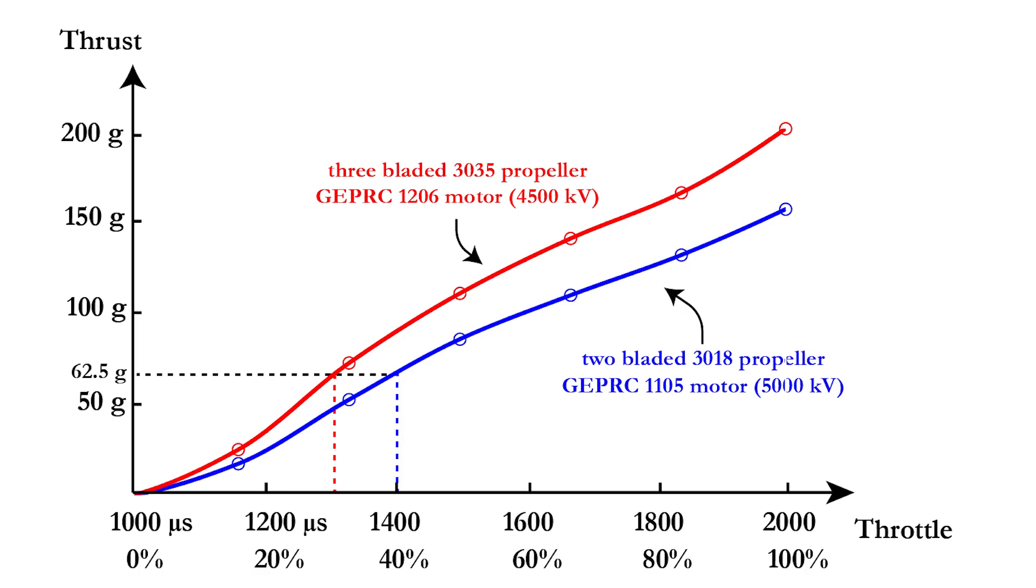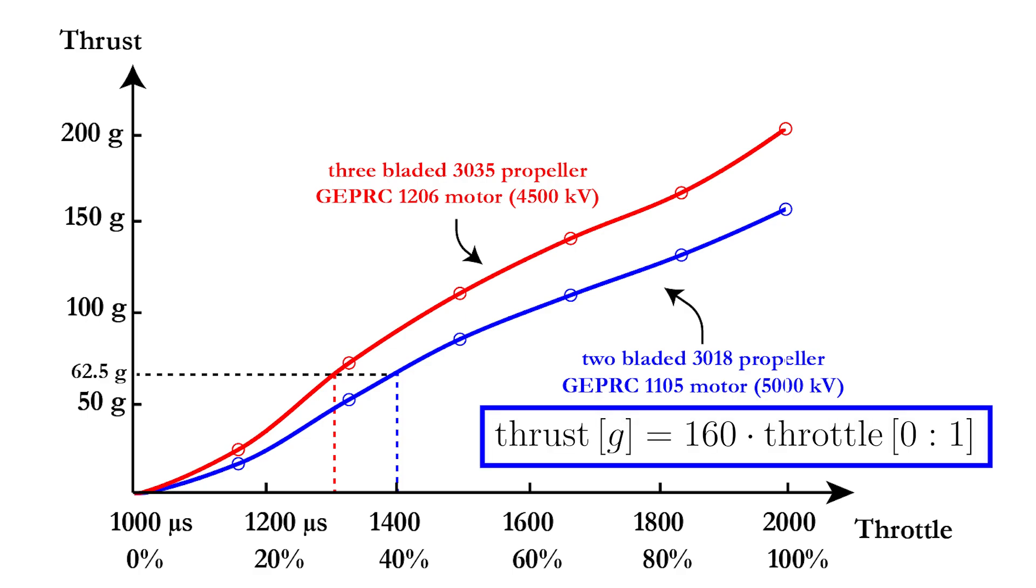We can simplify this graph by assuming it to be purely linear, which results in a thrust that is equal to 160 times the throttle, where the throttle is a value between 0 and 1.